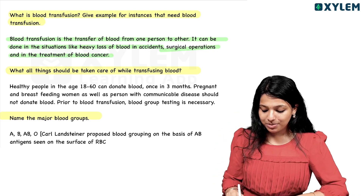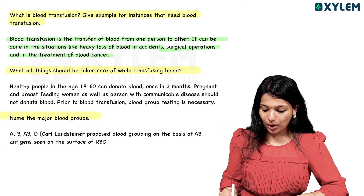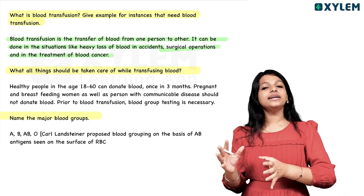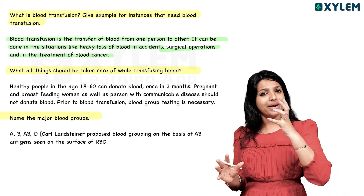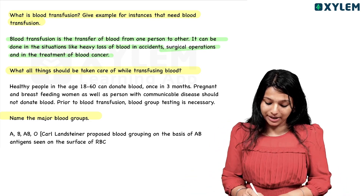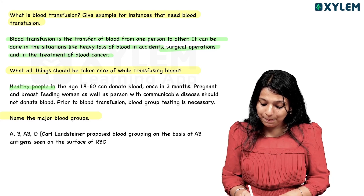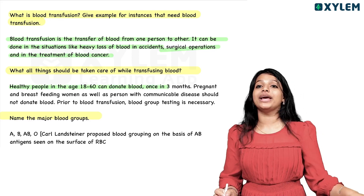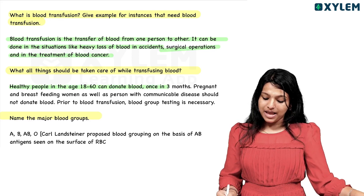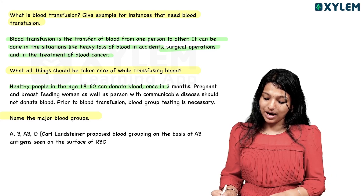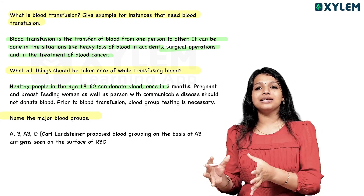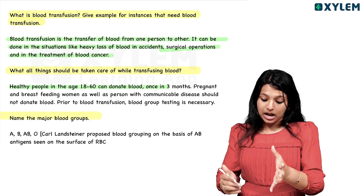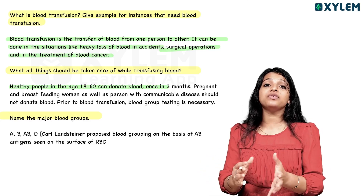What precautions should be taken while transfusing blood? Healthy people aged 18 to 60 can donate blood, and once in a 3-month period.